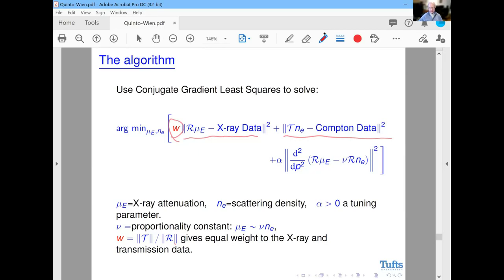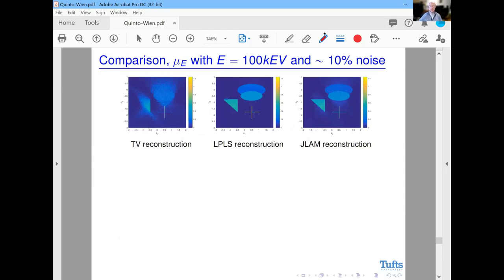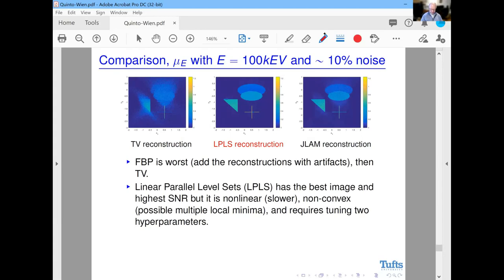Here are the results. We compared it to TV and filtered back projection. FBP is the worst, and then TV, which you can see. On the smart suggestion of a reviewer, it was suggested to compare our results to linear parallel level sets method. What we discovered is for this object it has the best image and the highest signal-to-noise ratio, but it's nonlinear so it takes longer. It's not convex, so at least theoretically there could be multiple local minima, and it requires tuning two hyperparameters. It's definitely the best of the three, but it's at least somewhat more complicated.